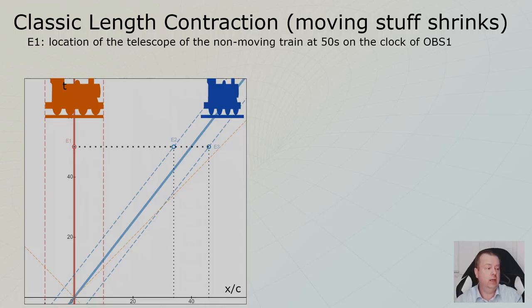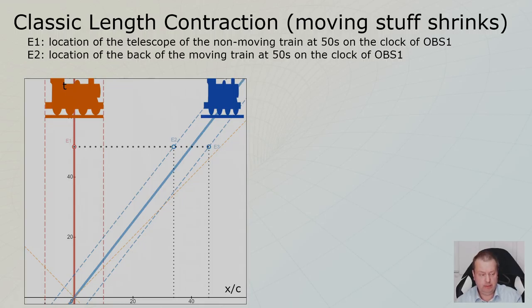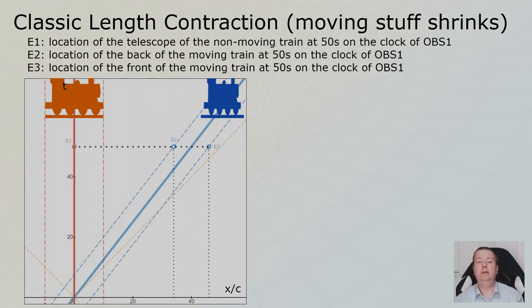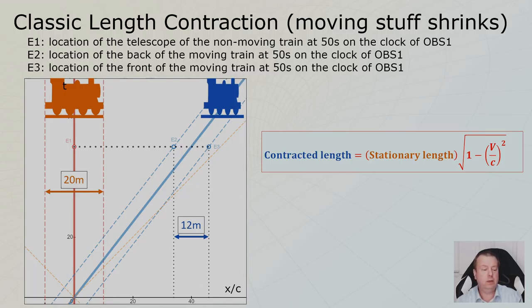It's at the non-moving train. And let's say in this case, we pick time to be 50 seconds on the clock of Observer 1, so the clock in the brown train. Event number two will be the back of the train at that same moment in time. And it will be somewhere at the location E2. And the front of the train will be at E3. So we have three events from the perspective of the non-moving train. This is 20 meters. And this is the contracted length, 12 meters. This is what happens if you plot it in a space-time diagram. This is the equation. You can derive this easily from the Lorentz transformation. And I think we will do this in the C level as well.